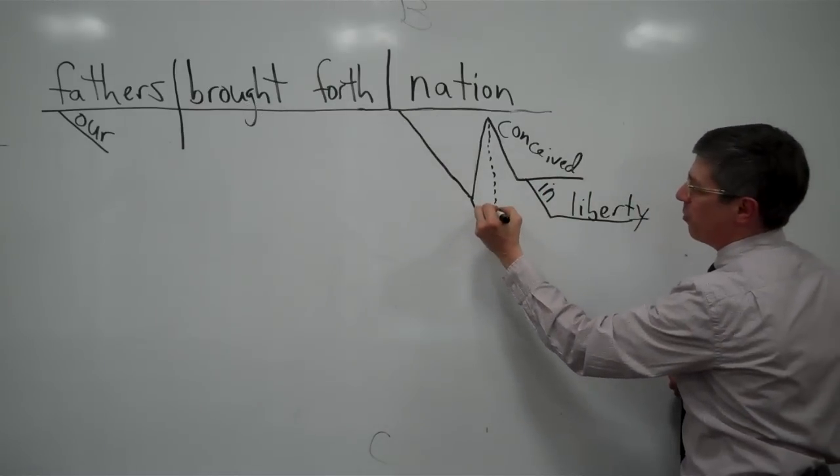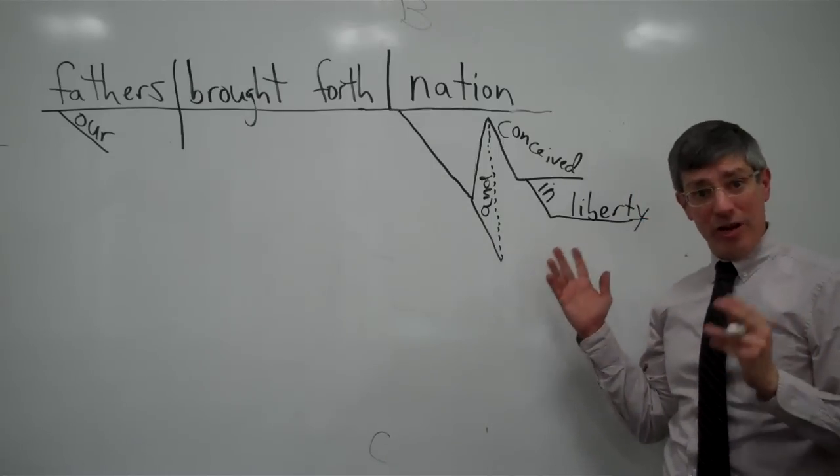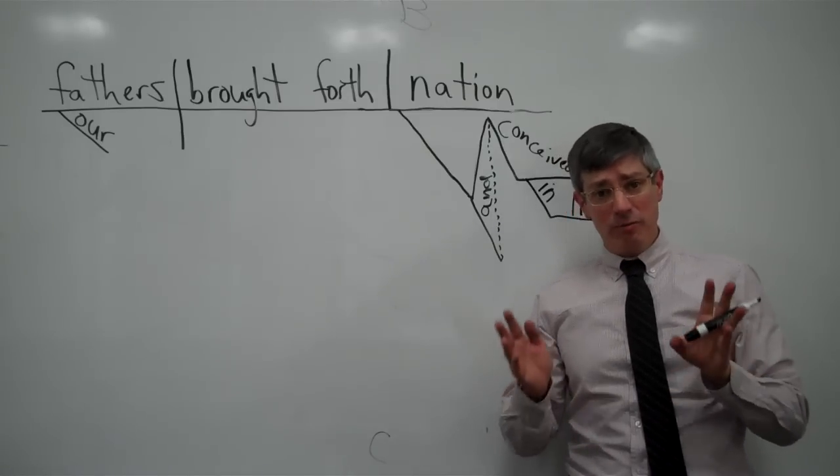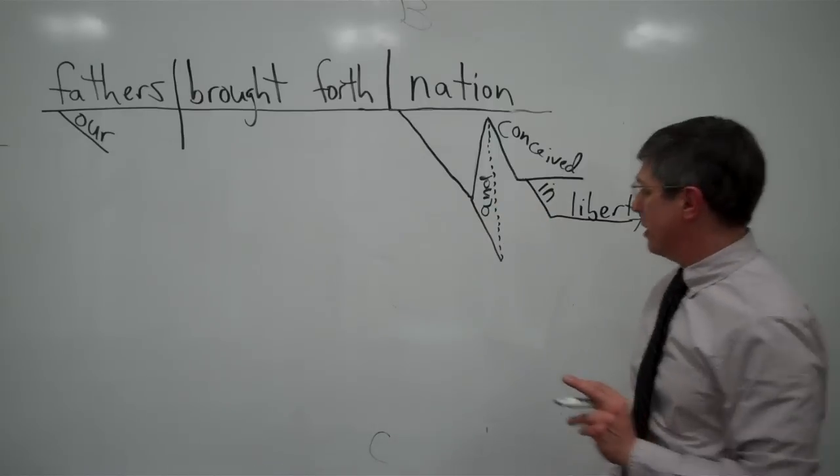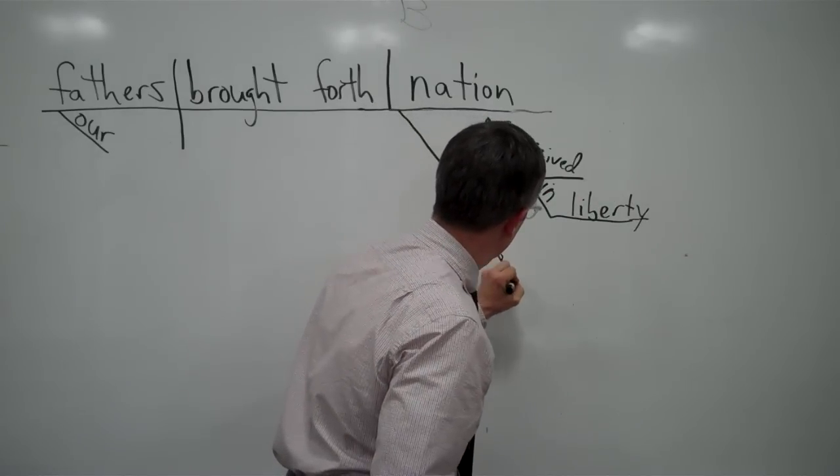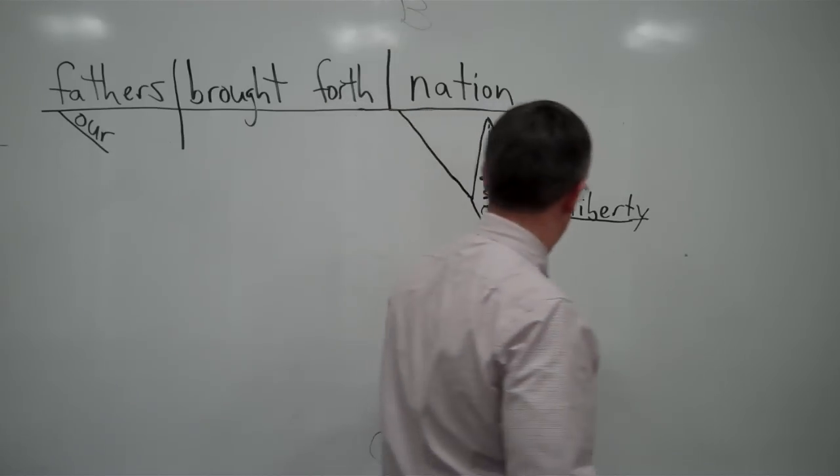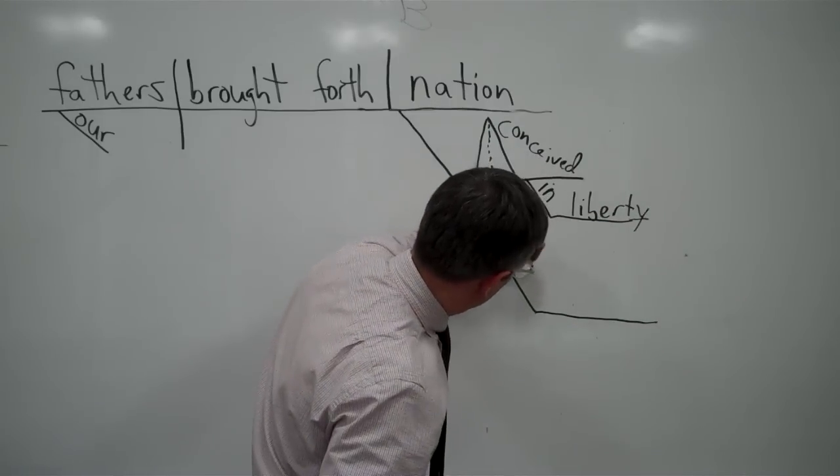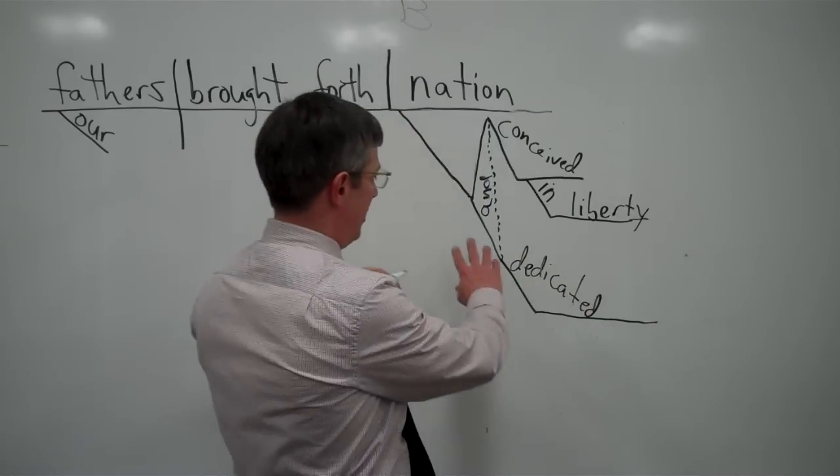This is where we would put the and. This and is joining. It's a coordinating conjunction. And what it's coordinating is two participial phrases functioning as adjectives. As participial phrases always do. So that's what is being coordinated. And we make that look just like the other one. So it's conceived in liberty and dedicated to the proposition. Okay. So dedicated is our participle. Okay. Dedicated.